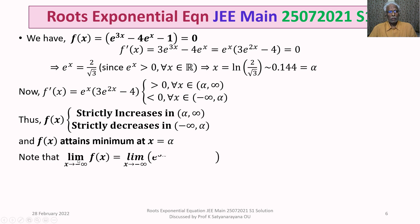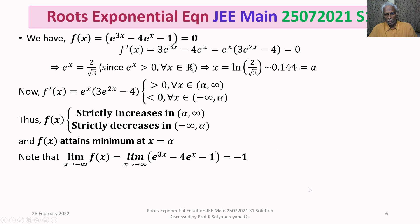Furthermore, the limit as x → -∞ of f(x) = e^(3x) - 4e^x - 1 equals -1. So f(x) takes the value -1 as x → -∞ and attains its minimum at x = alpha. From alpha, f(x) increases and hence crosses the x-axis, giving one real root.